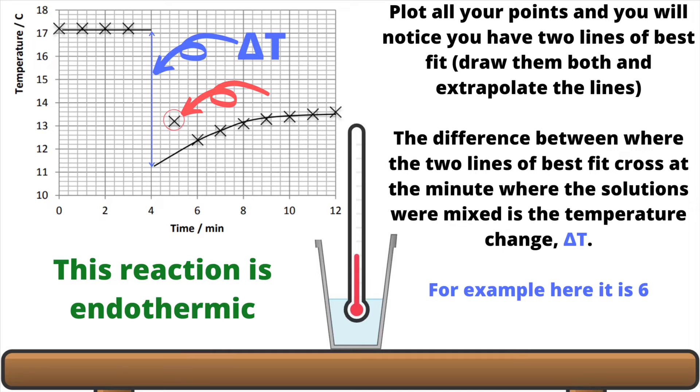You'll also notice that one of the points has been circled up in red and has got a big red arrow pointing at it. This is an anomalous result. It's clearly out of sync with the other points and so it isn't included in either of the two lines of best fit.